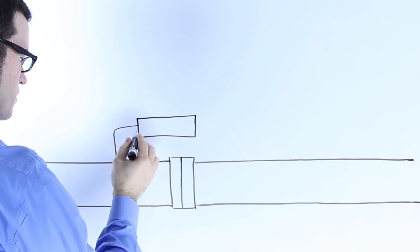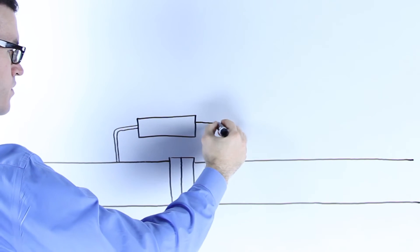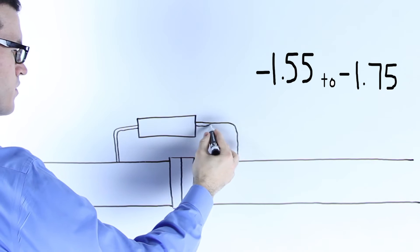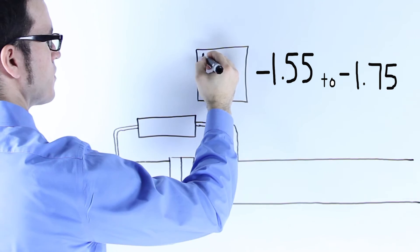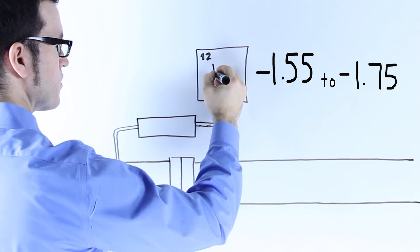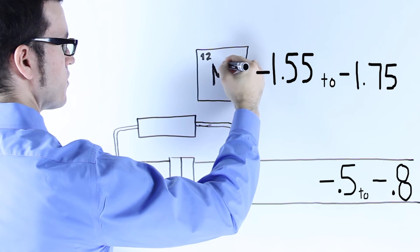Every metal carries a specific energy. For instance, magnesium has a voltage of negative 1.55 to negative 1.75 volts, while steel has a voltage of negative 0.5 to negative 0.8 volts.